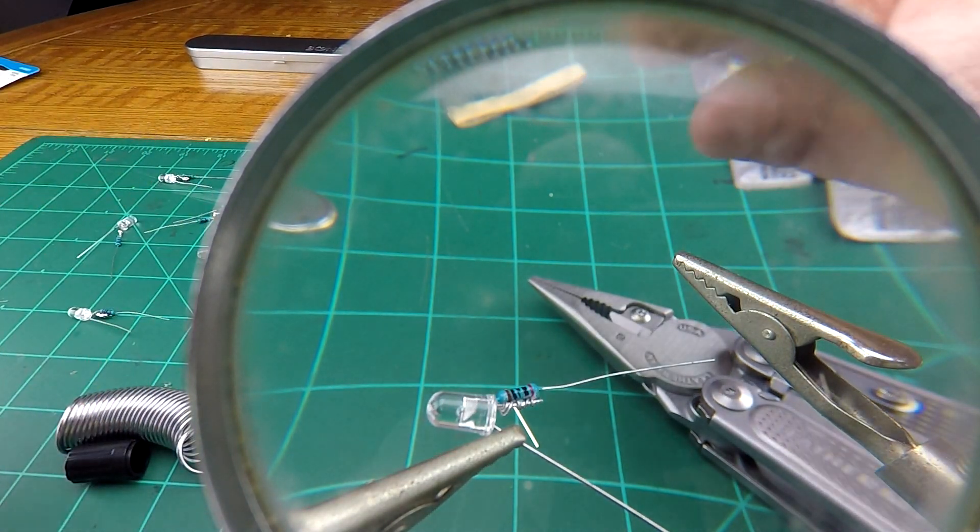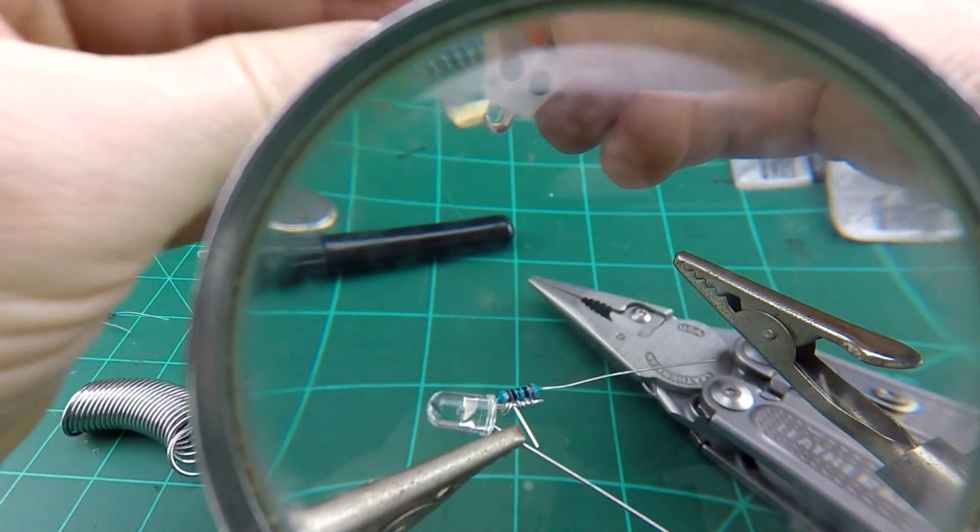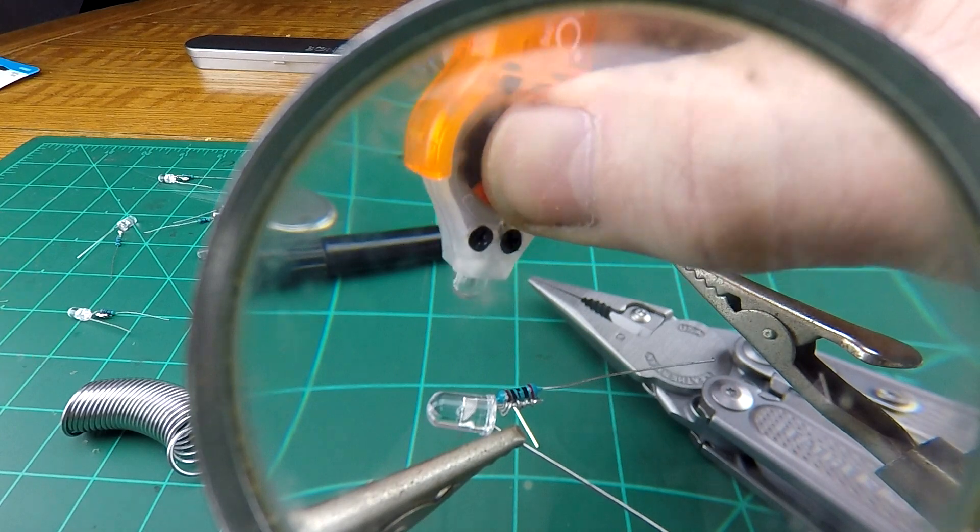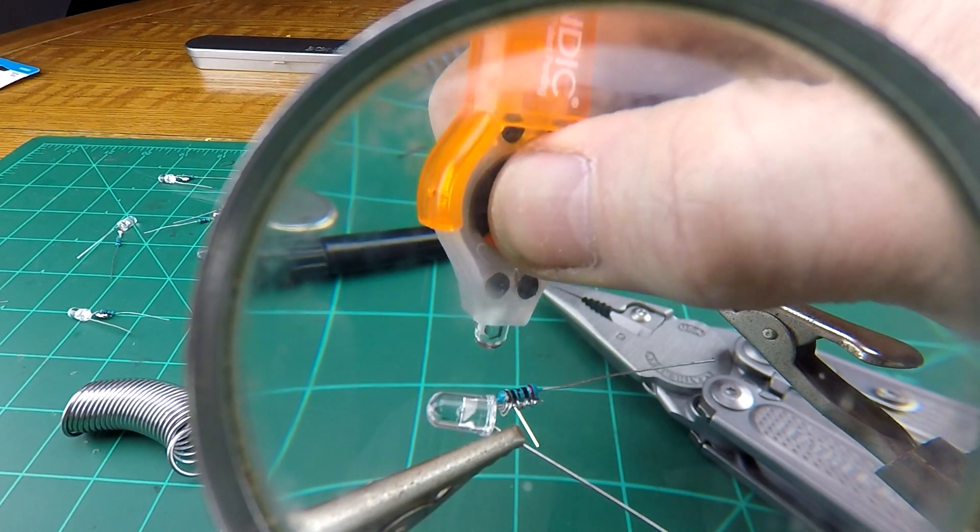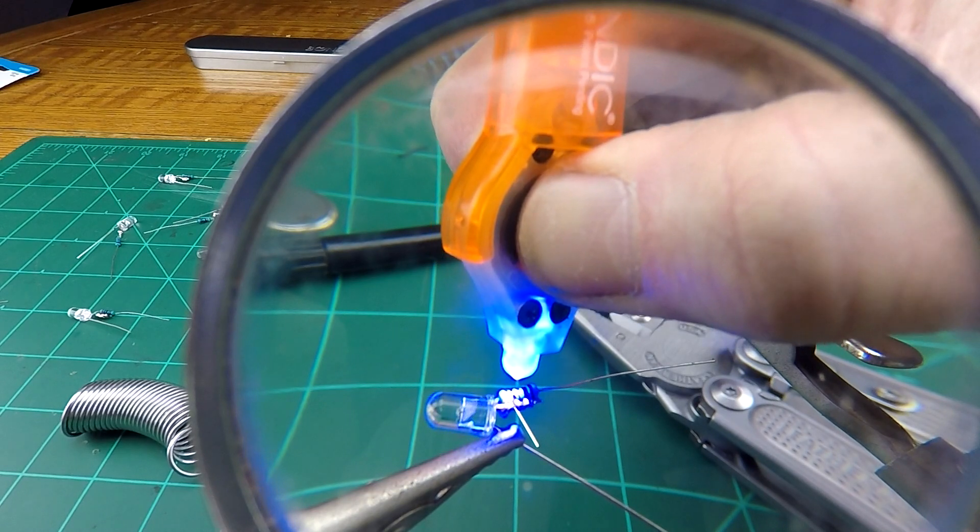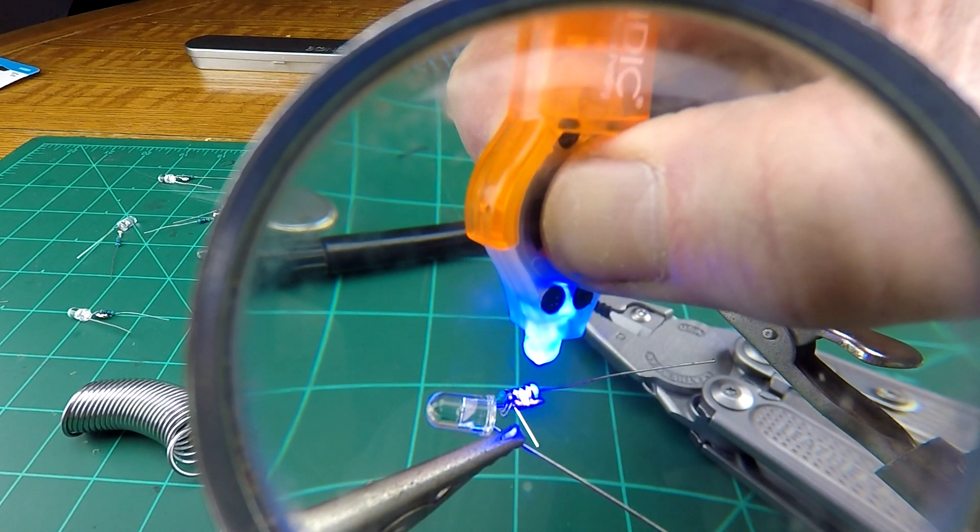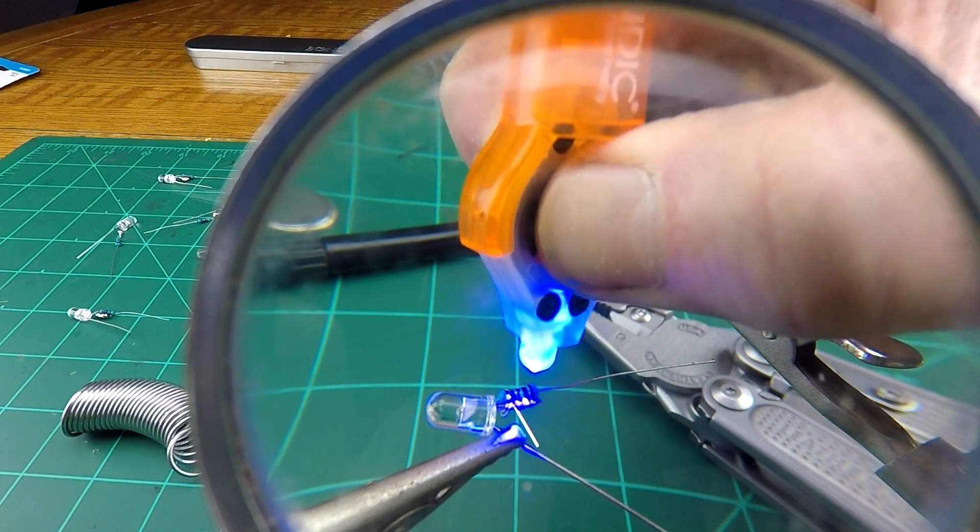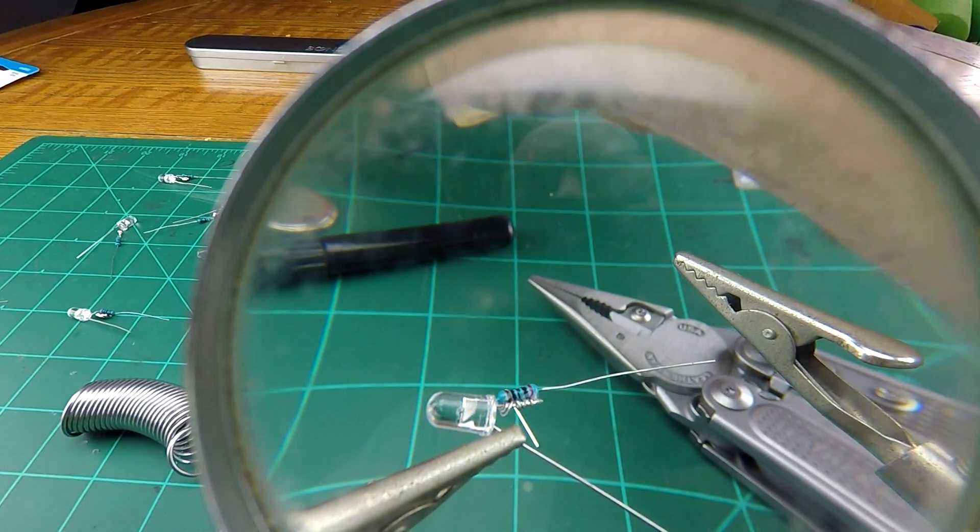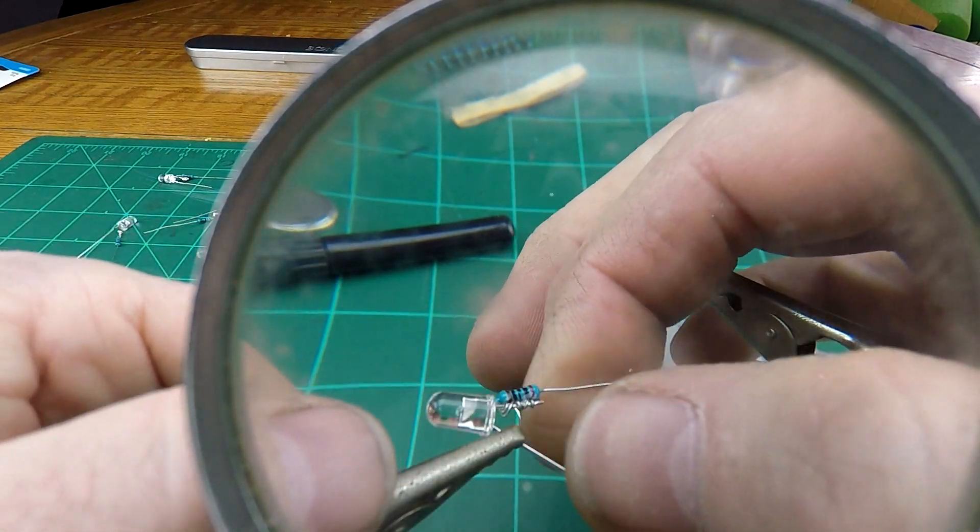Special Bondix glue. It cures with ultraviolet light in one, two, three seconds. So that'll make a tight bond, which it did.